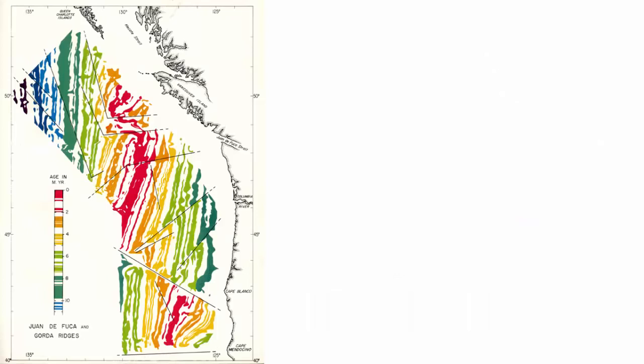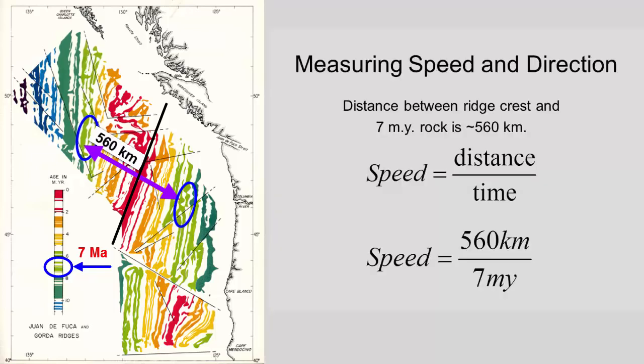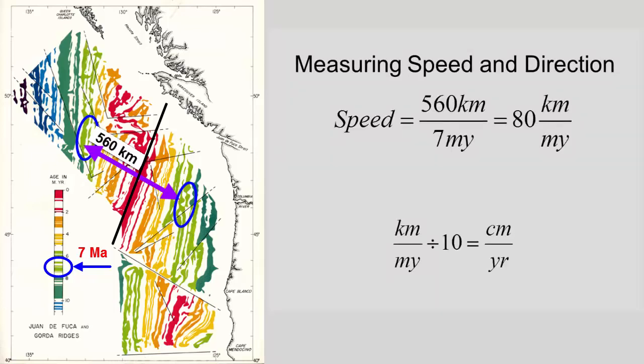So back to measuring speed and direction. Let's use this normal polarity reading that represents 7 million year old rock. Where was this rock when it formed? Here at the spreading center. So what's the direction of plate motion? Away. And how fast on average has it been spreading? If 560 kilometers separates the rock from its origin, then it has traveled 560 kilometers in 7 million years. That's 80 kilometers per million years, or 8 centimeters per year.